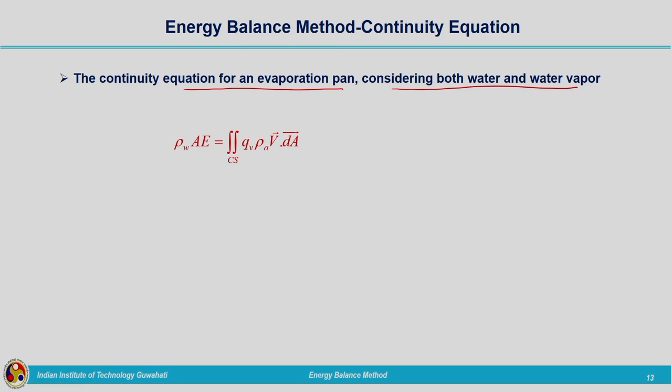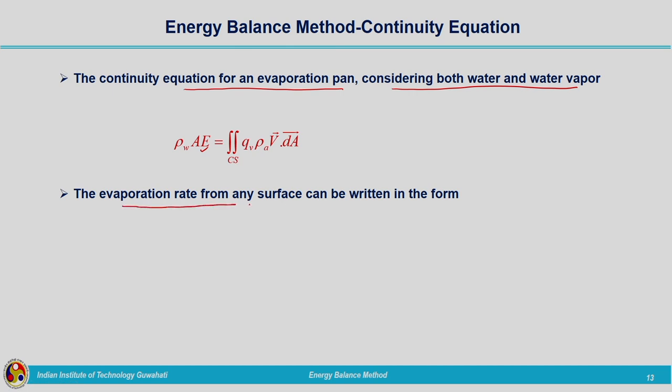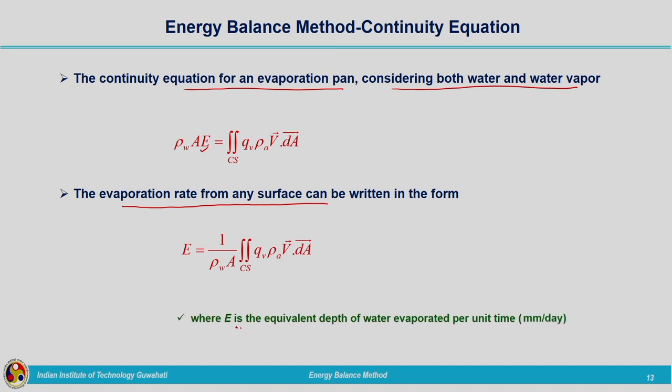Our intention is to calculate the evaporation, so we rewrite equation 3 to get the evaporation rate from any surface: e equals (1 / rho_w A) times the surface integral of qv times rho_a times v_dot dA. Here e is the equivalent depth of water evaporated per unit time. Now we need to write the energy equation, because the main reason behind the process of evaporation is heat energy, so we need to incorporate the energy equation along with the continuity equation.